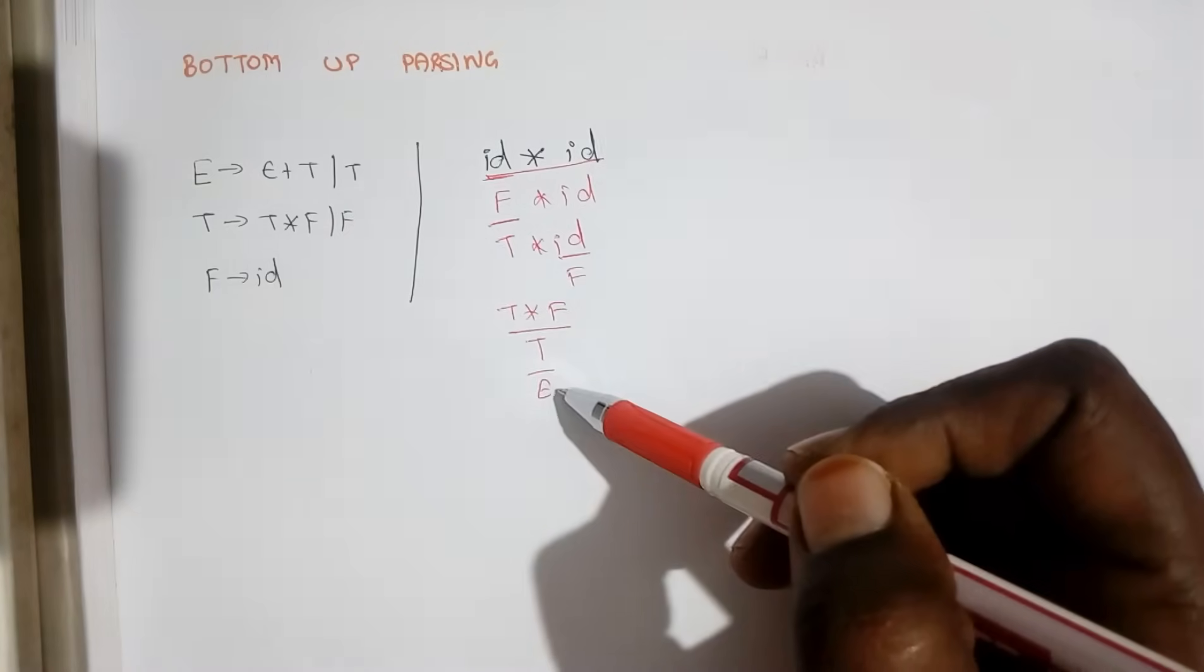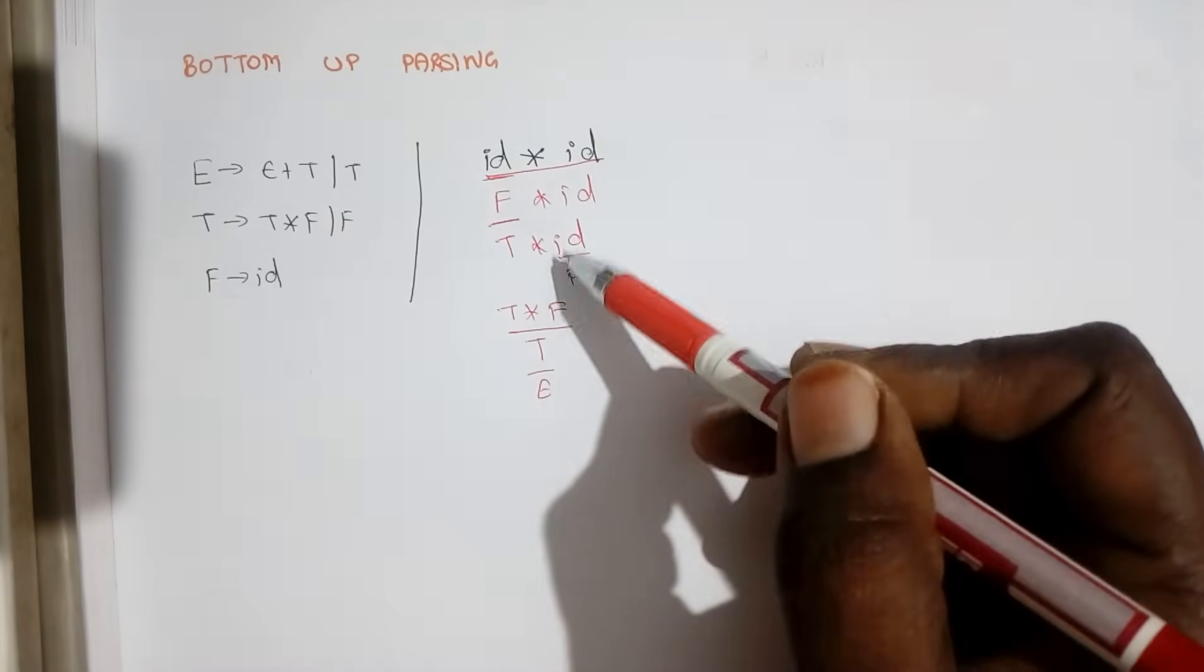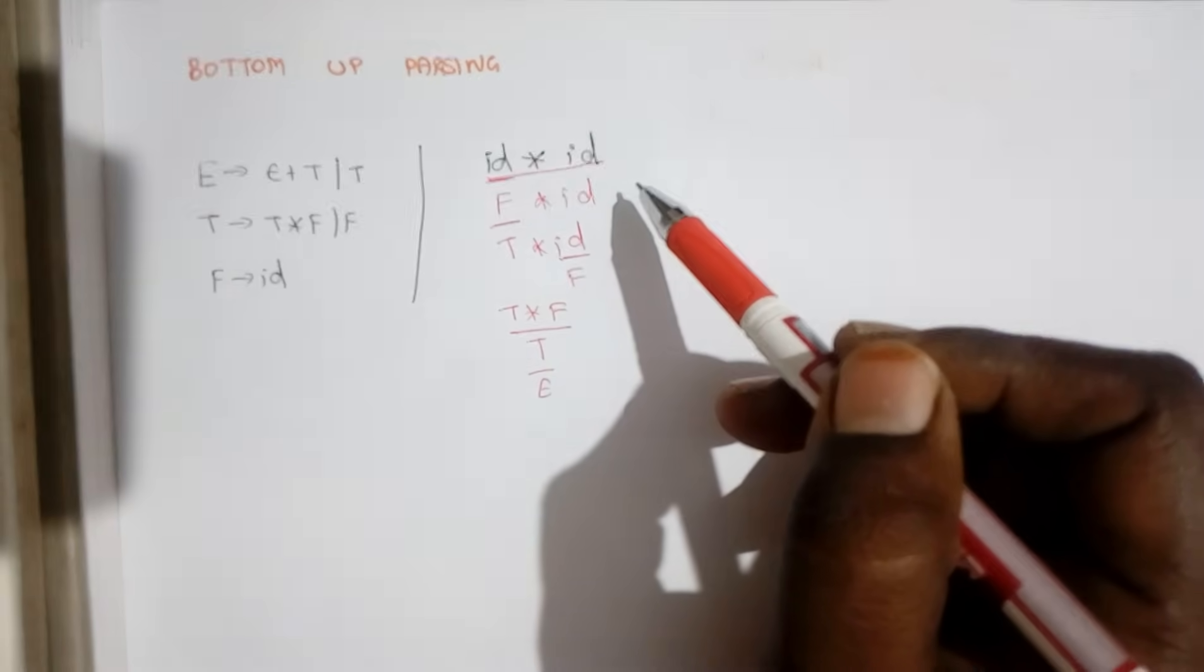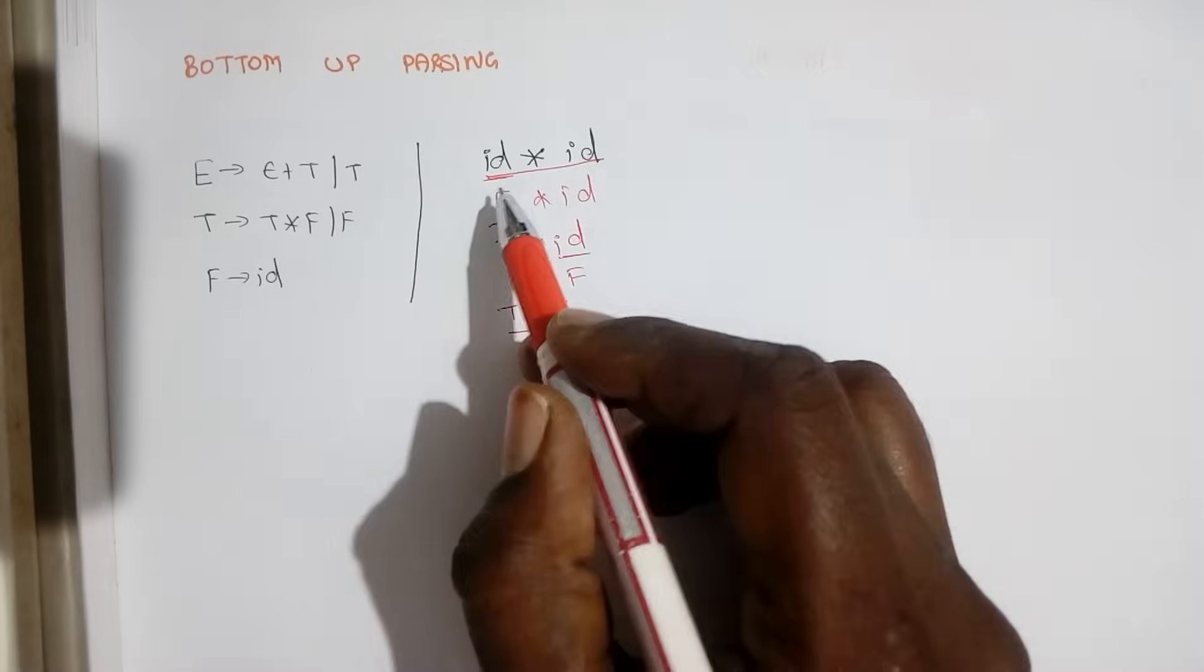In derivation, we start with the starting symbol, we keep on applying some production and we derive to input. This process we call it as reduction. We start with the input symbol,